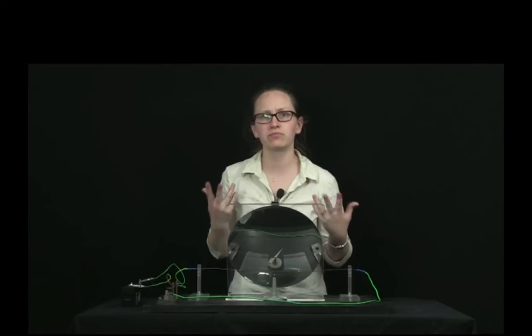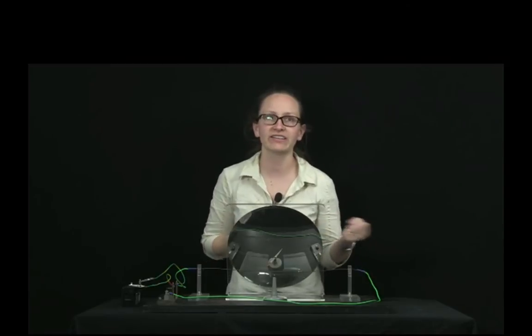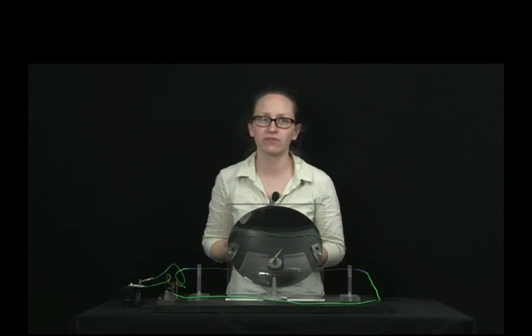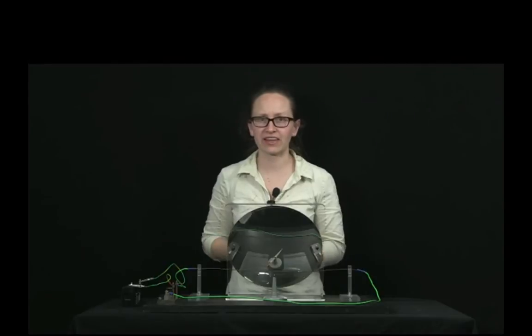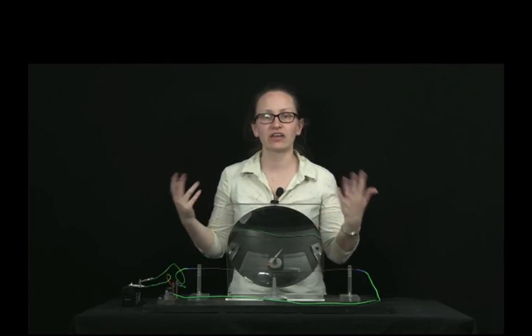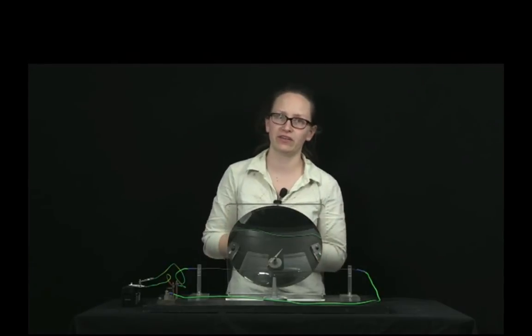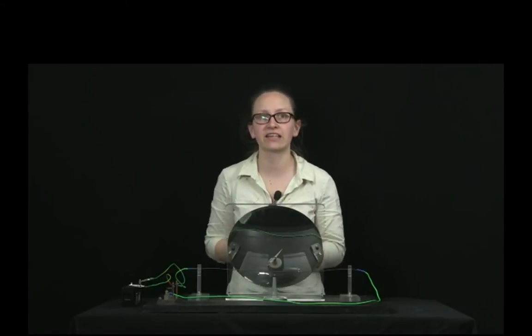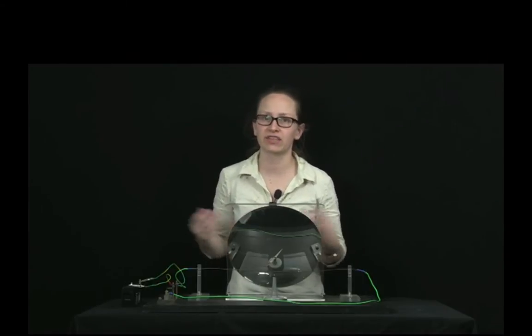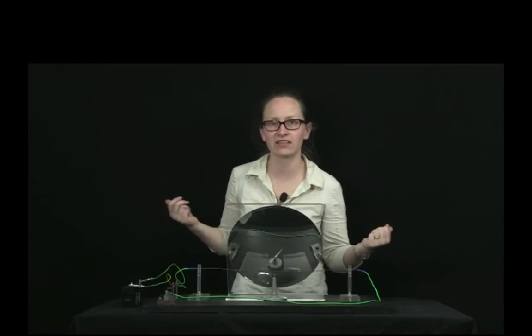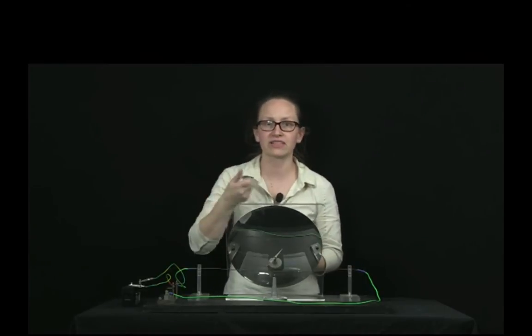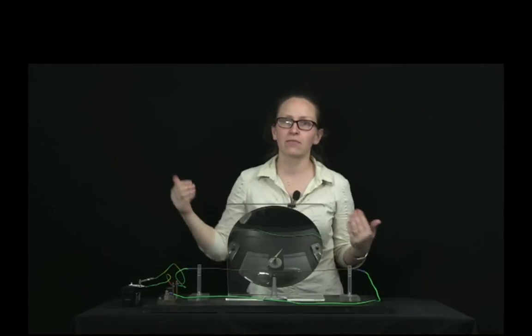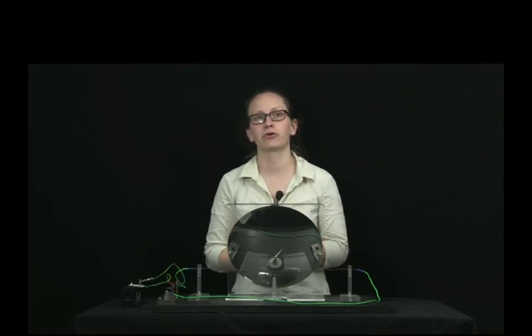So we've seen that moving charges, or a current in a magnetic field, feels a force. But it was actually found that a current actually generates its own magnetic field. This was first discovered by Hans Christian Ørsted in 1820 when he was giving a public lecture in physics and he noticed that a compass needle was deflected by a current travelling through a wire.